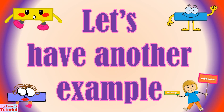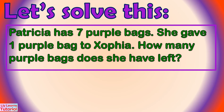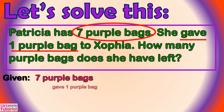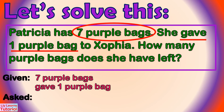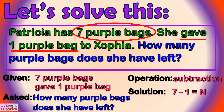Let's have another example. Patricia has 7 purple bags. She gave away 1 purple bag to Sophia. How many purple bags does she have left? What are given: 7 purple bags and 1 purple bag given away. What is asked: how many purple bags does she have left? The word clue is 'gave,' so we'll use subtraction. The solution is 7 minus 1 equals n, and the answer is 6.